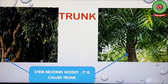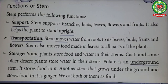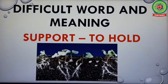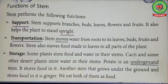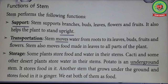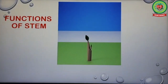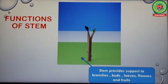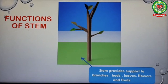Now let's start with the functions of stem. Stem performs the following functions. Number one: support. Underline 'support' and write its meaning: to hold. Stem supports branches, buds, leaves, flowers, and fruits. It also helps the plant to stand upright. Underline 'upright' and write its meaning: straight. Stem bears branches, buds, leaves, and fruits, and it helps the plant to stand straight.